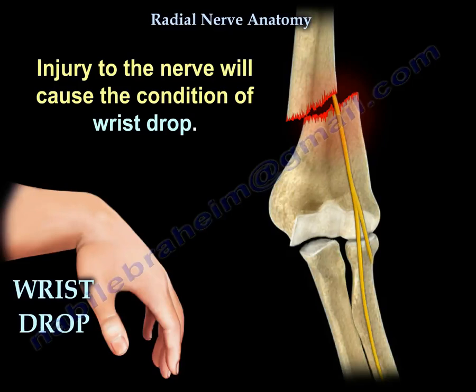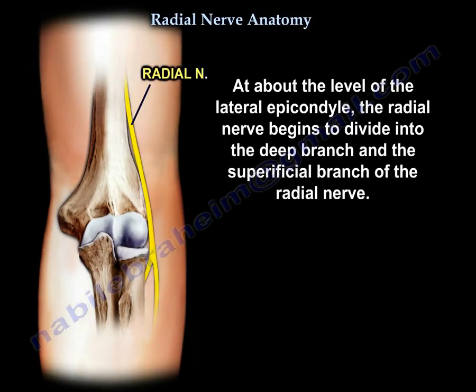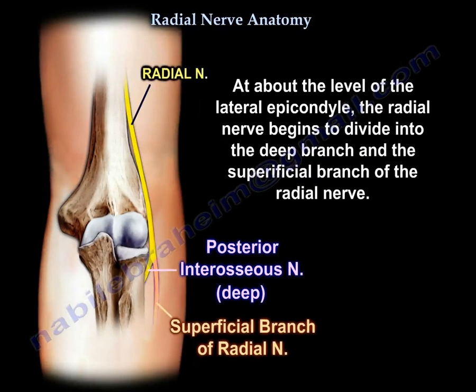Injury to the radial nerve will cause the condition of wrist drop. At about the level of the lateral epicondyle, the radial nerve begins to divide into the deep branch and the superficial branch of the radial nerve.